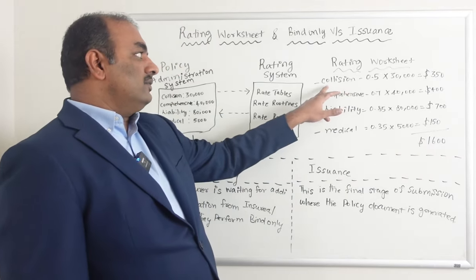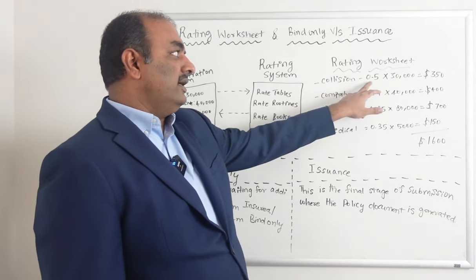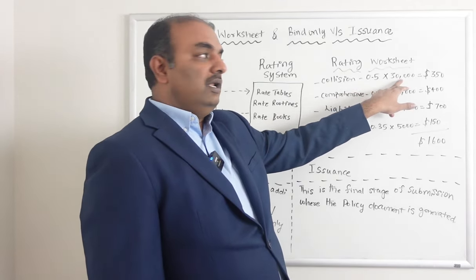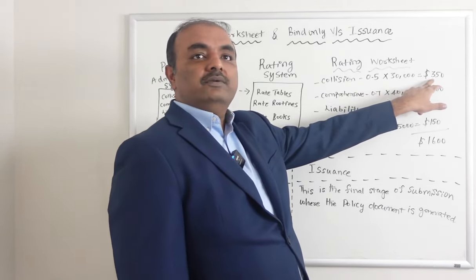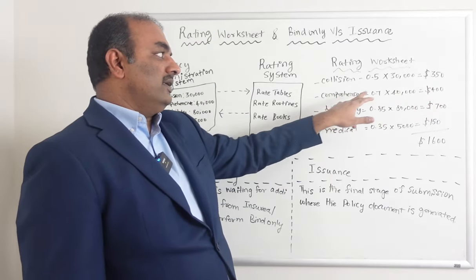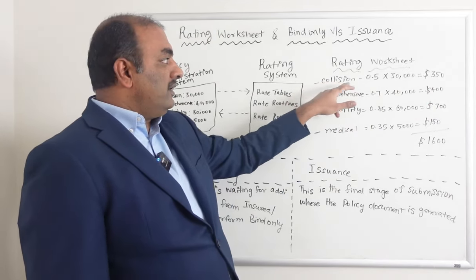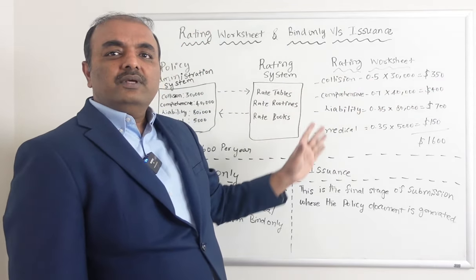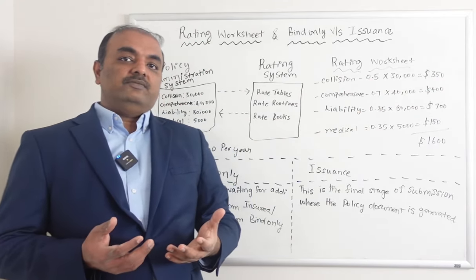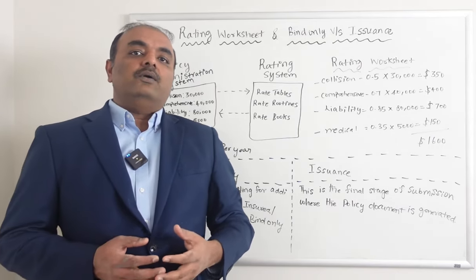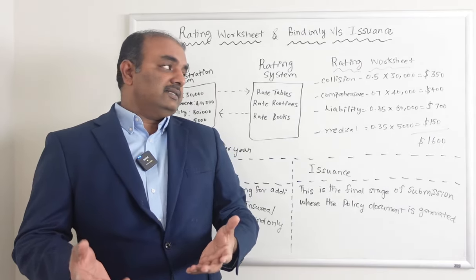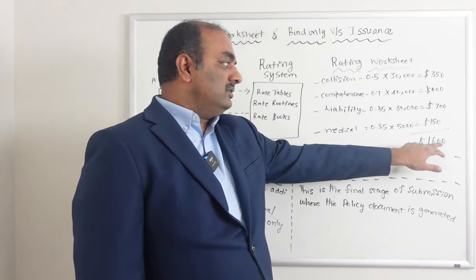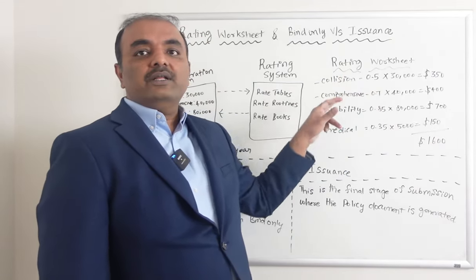To start with, for collision coverage, it will say the rate per $100 is 0.5, then you multiply by the overall limit and it gives you the premium. Similarly for comprehensive coverage, each individual coverage level will calculate the premium by applying the factors. Plus we will have all the attributes like location, where the car is garaged, what is the age of the driver, etc. And then we arrive at the premium, which is $1,600.